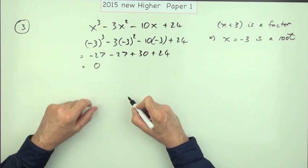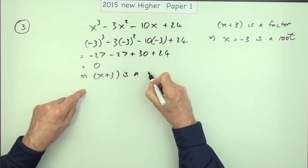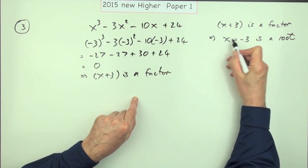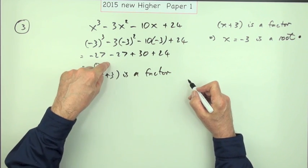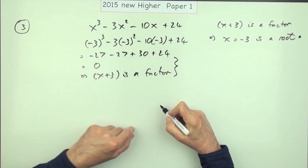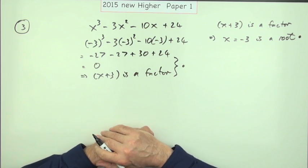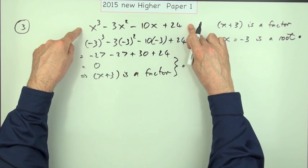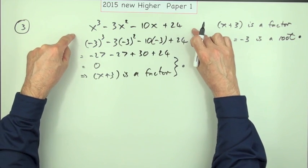That comes to zero, which means x plus 3 is a factor. There'd be two marks: one for knowing to use negative 3 — having the equivalent statement that x equals negative 3 — and one for the test coming to zero. But you must have a linked statement; you can't just leave it equal to zero or jump straight to 'it's a factor.' However, if you demonstrate the factor this way, you'd have to start all over again for the actual factorization — you're up a bit of a gum tree doing it this way.